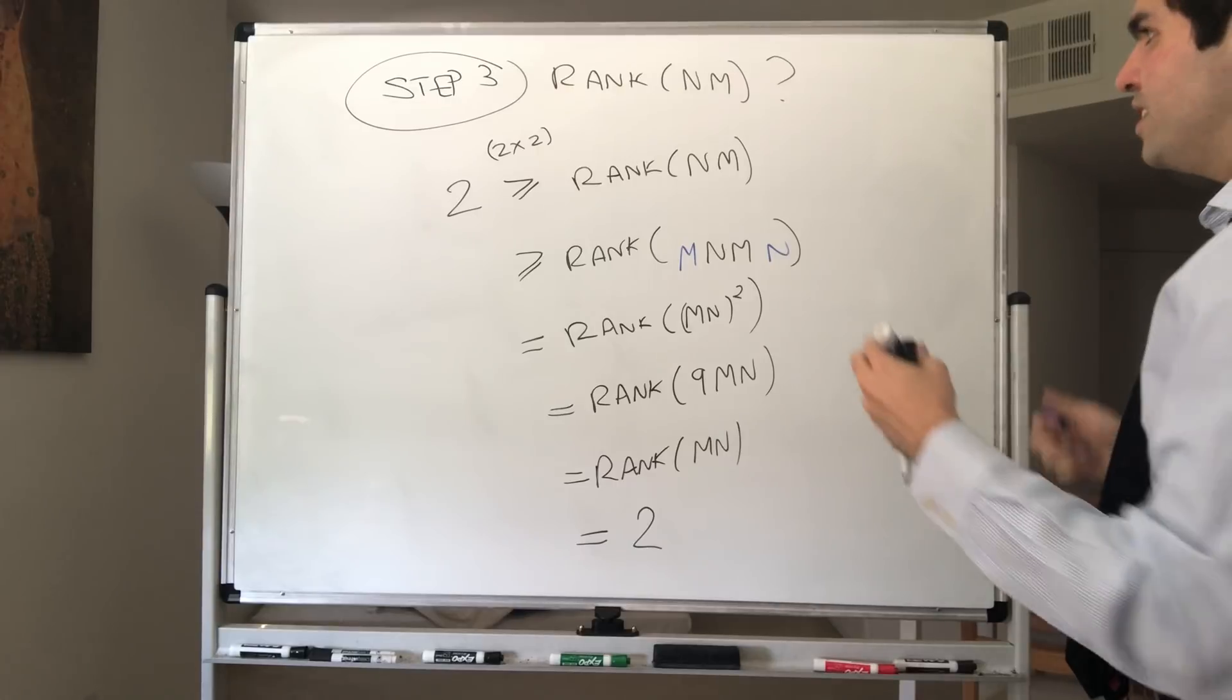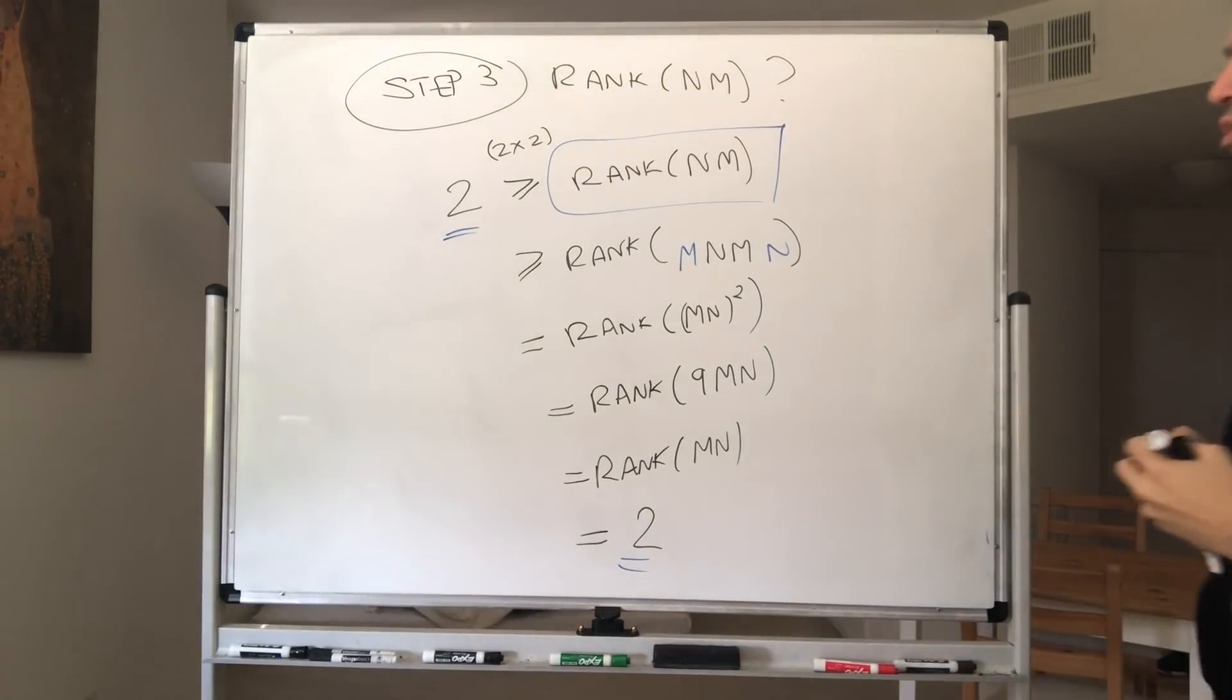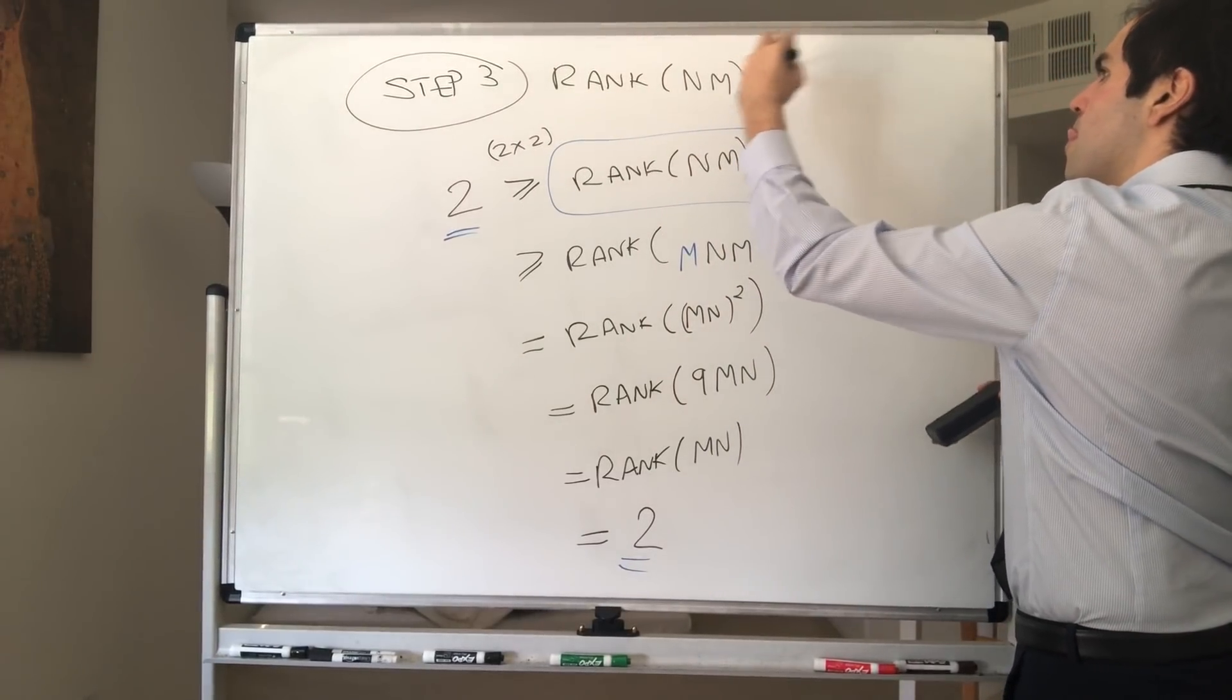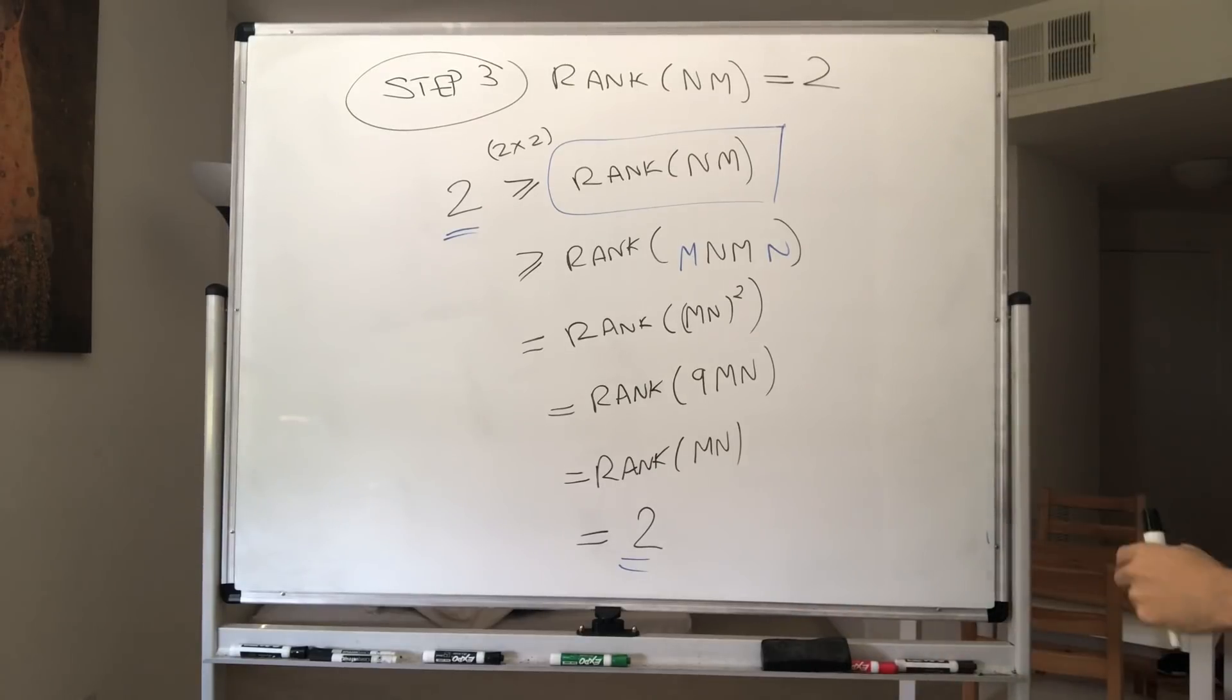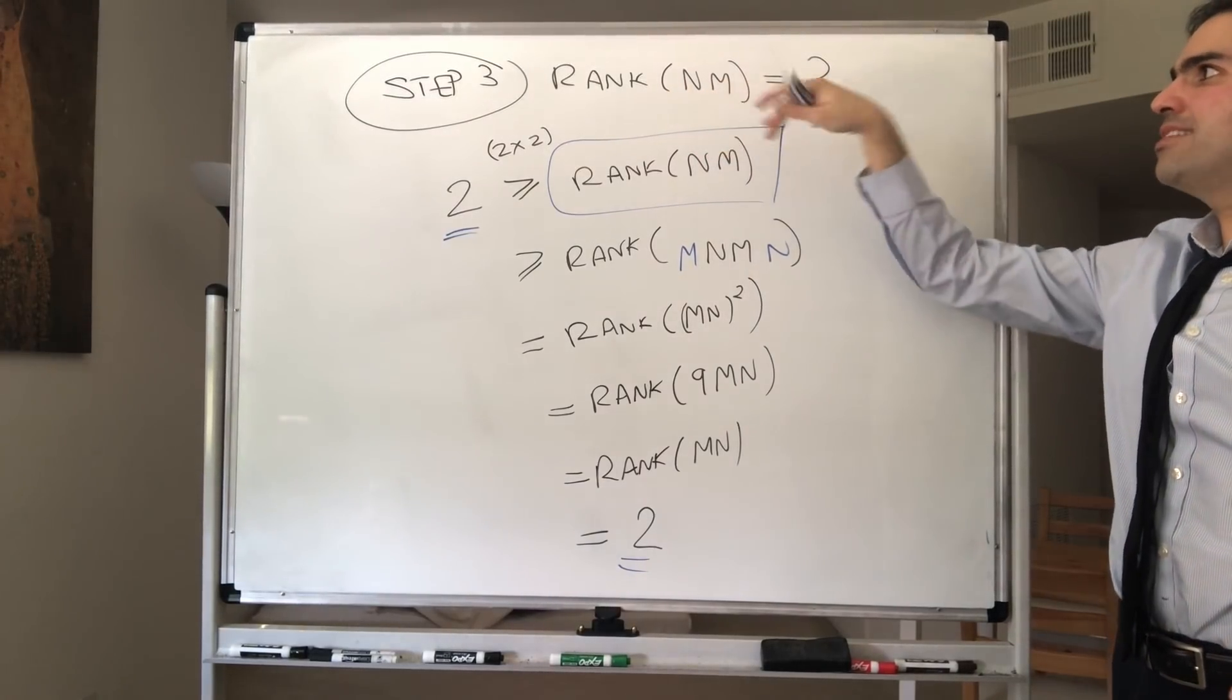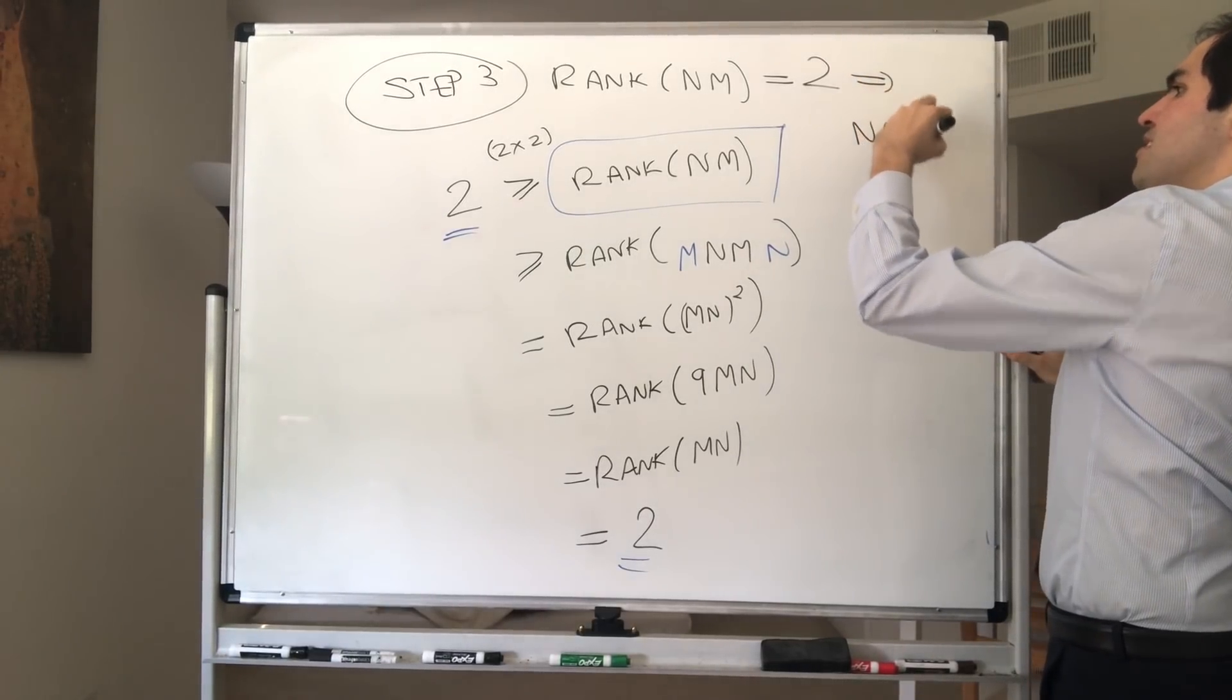Alright, so what do we get? We get that NM, its rank, it's squeezed between 2 and 2. So, in fact, the rank of NM is just 2. Alright, and it turns out, from this we can conclude, because what is NM? NM is just a 2 by 2 matrix. So, the fact that NM has rank 2 and is a 2 by 2 matrix, it just implies that NM is invertible.